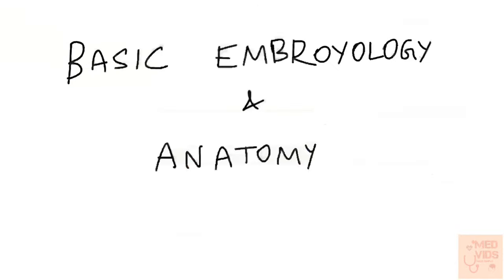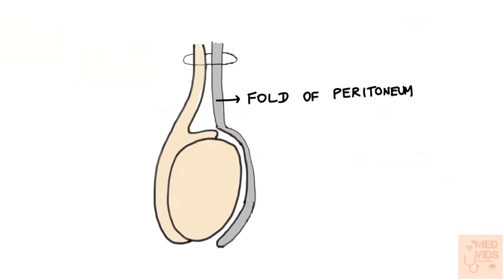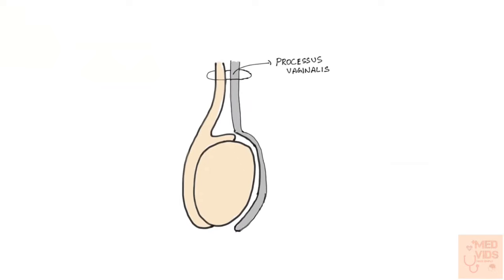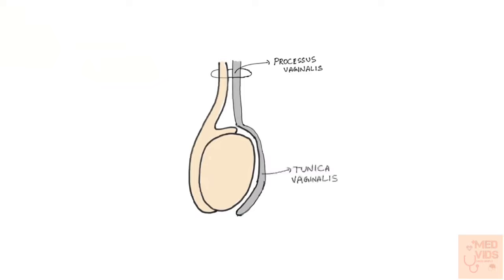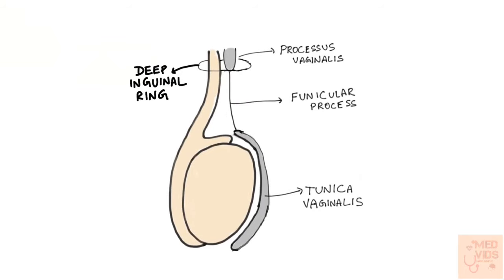First let's see some basics. During descent of the testis, there's also descent of a fold of peritoneum into the scrotum. This fold of peritoneum is called processus vaginalis. The part of processus vaginalis which covers the testis is the tunica vaginalis. Processus vaginalis then starts to regress from the deep inguinal ring to just above the testis. This regressed part is called the funicular process. Thus the connection between processus vaginalis and tunica vaginalis is now cut off.